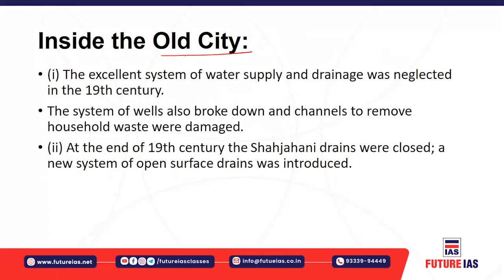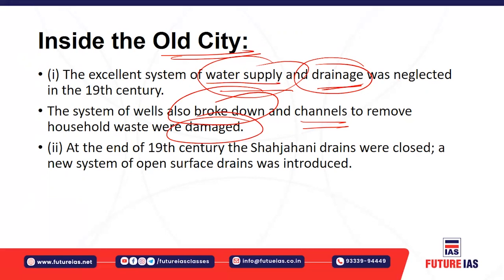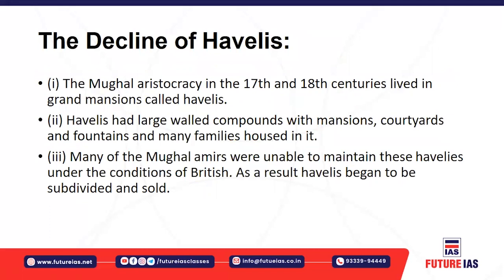Inside the old city, there had been an excellent system of water supply and drainage. During the British period this was neglected, because the British wanted to erase the Mughal legacy. The system of wells was completely broken down and the channels to remove household waste were completely damaged. The Mughal drainage system was closed and a new system of open surface drains was introduced by the British in the 19th century. The overall conditions in the old city did not see adequate development.